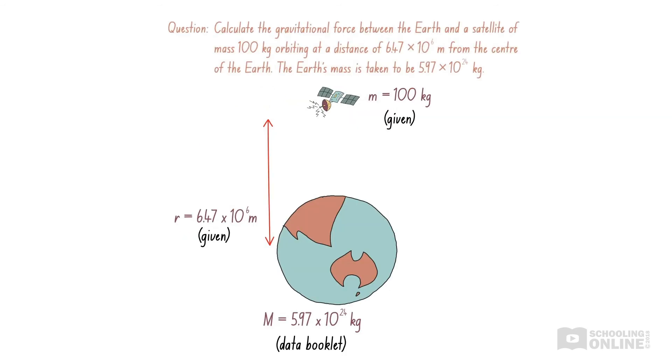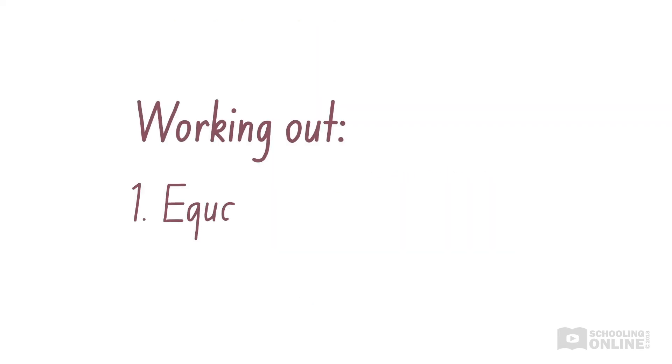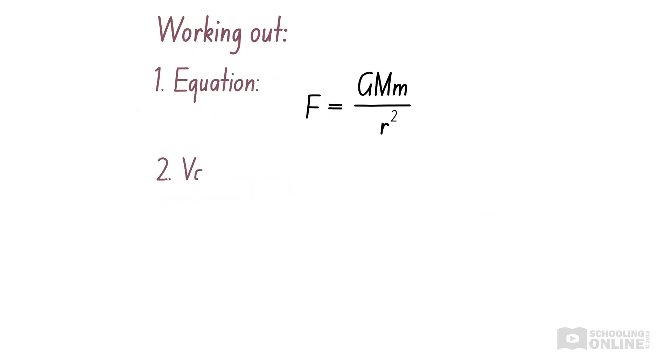We also know from the data booklet that the gravitational constant, G, is 6.67 x 10^-11. First, we write down the relevant equation. Then write all known variables in SI units.